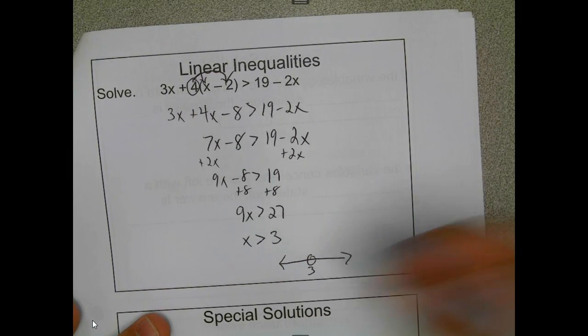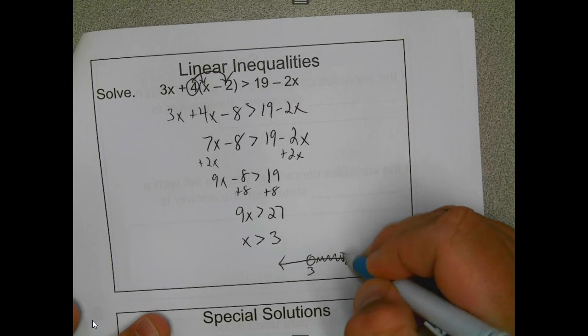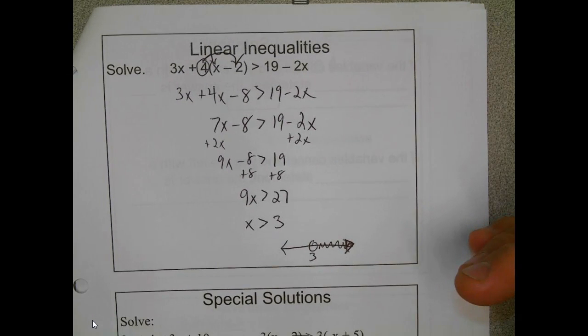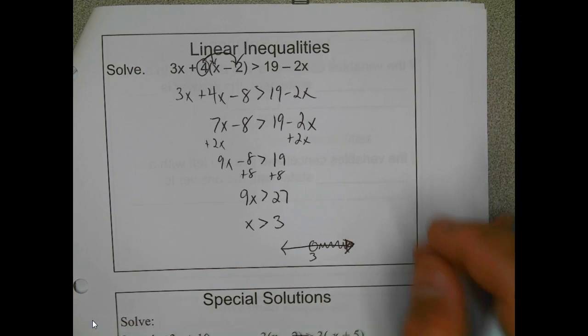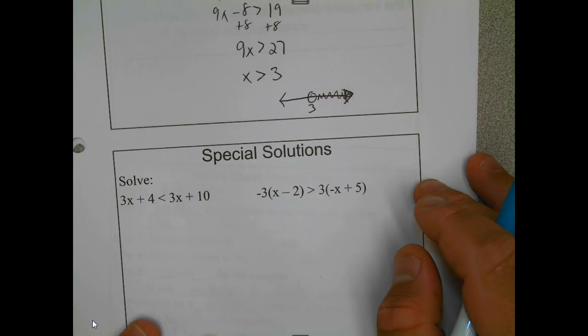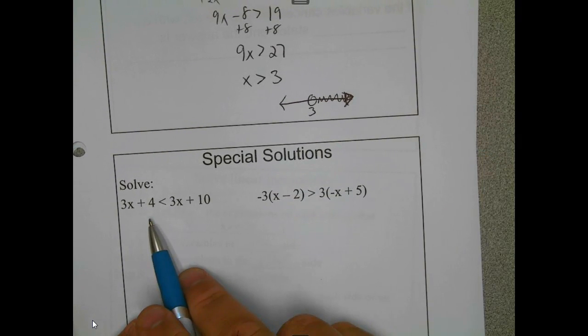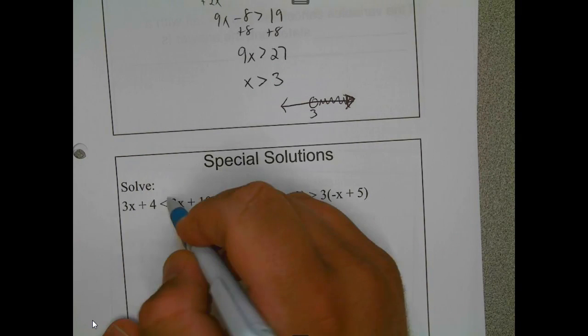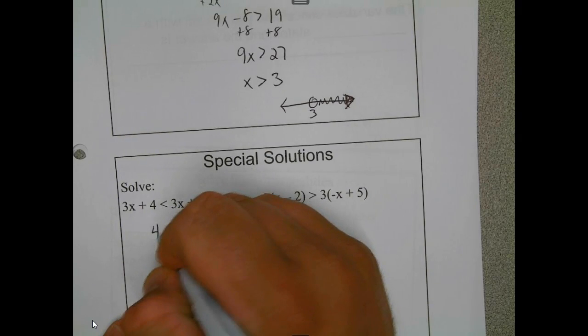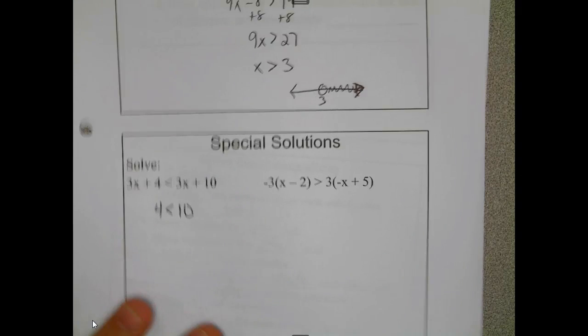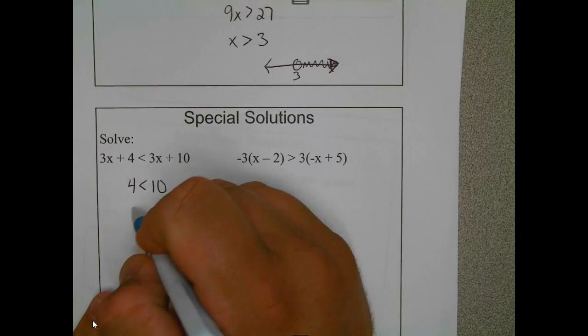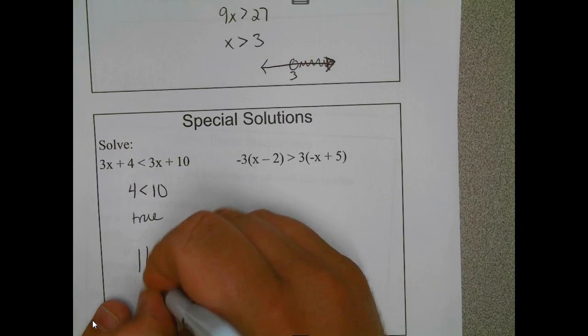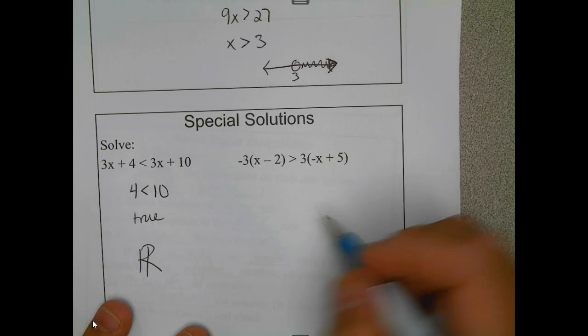Now sometimes you solve an inequality and the answer doesn't make sense. For example, 3x + 4 and 3x + 10—well, if I go to subtract 3x from both sides, I'm going to end up with 0x, so then I end up with 4 is less than 10. That is true—4 is less than 10—and so the solution to this inequality is what we call all real numbers, and we'll get to that in a minute, or infinitely many.